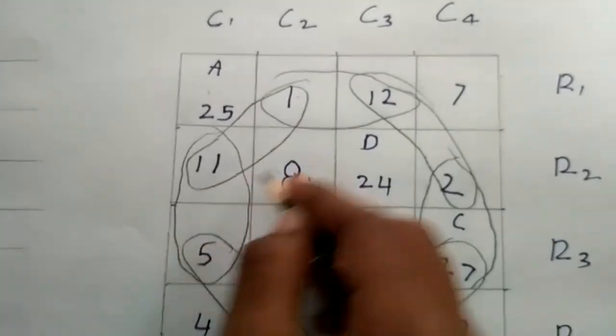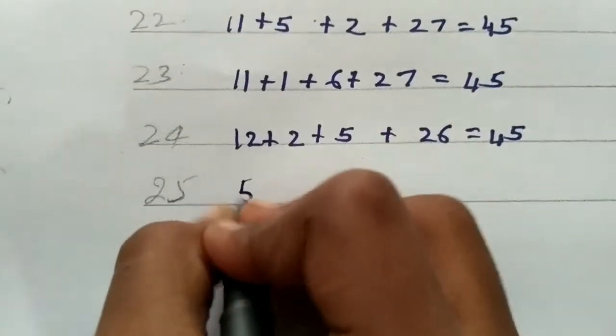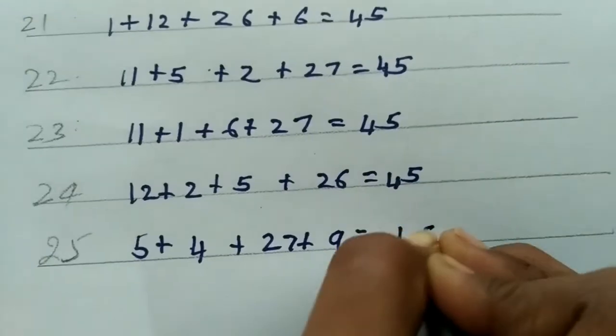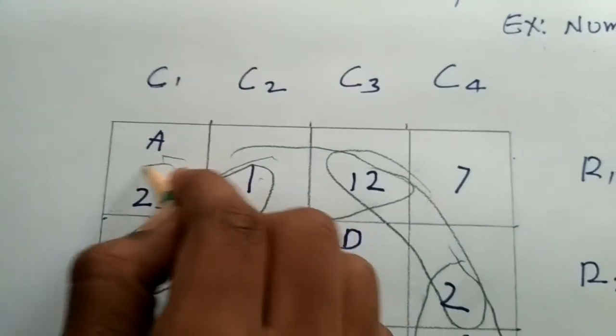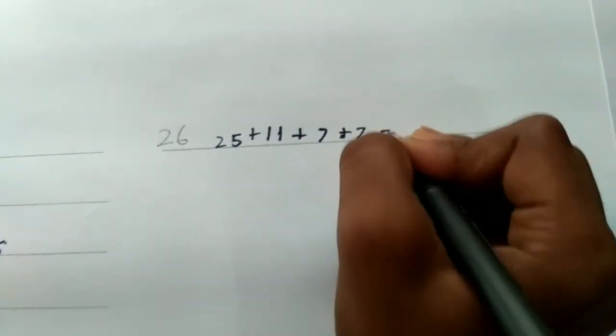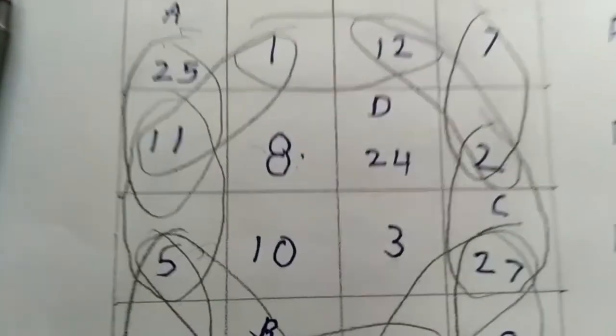Again: 5 plus 4 plus 27 plus 9 equals 45. Again: 25 plus 11 plus 7 plus 2 equals 45. These are the 26 ways to get 45 in this 4x4 grid. Bye.